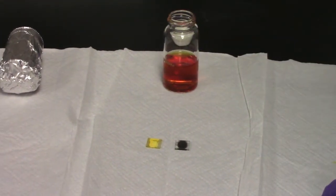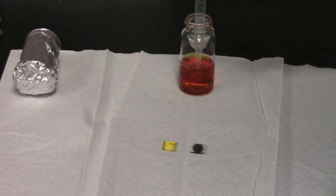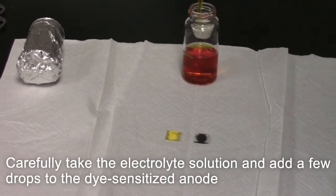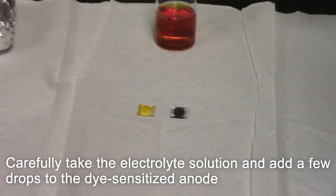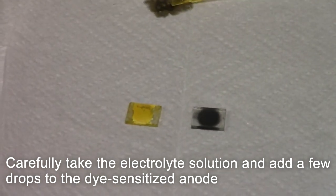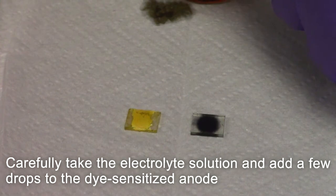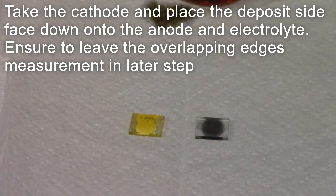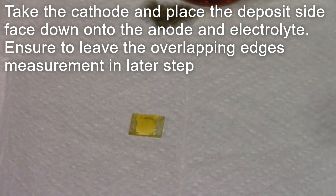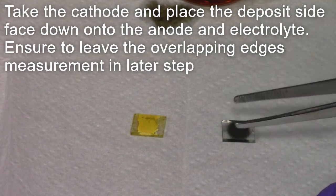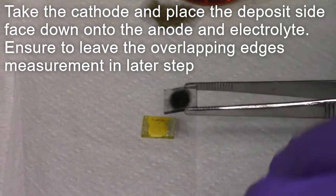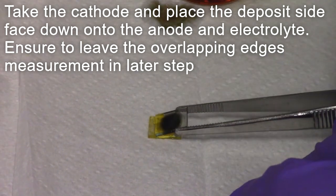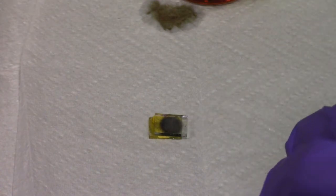Begin by taking a small amount of the prepared electrolyte solution and carefully add a few drops to the dye-sensitized anode. After the electrolyte solution has been added to the dye-sensitized anode, take the graphite deposited cathode and place the deposited side onto the dye-sensitized anode and electrolyte solution.